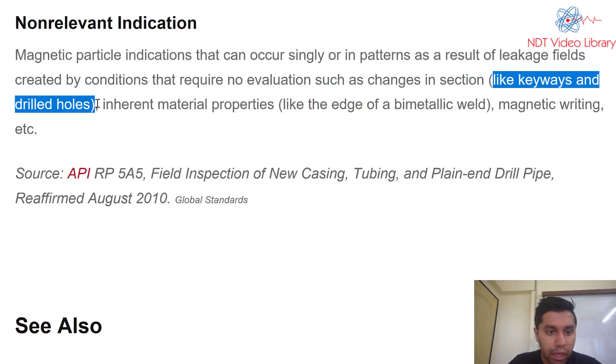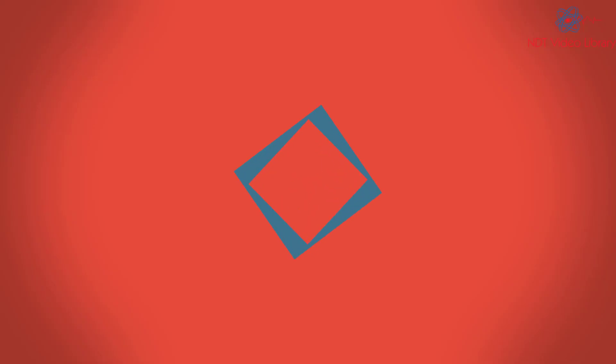In liquid penetrant testing, non-relevant indications include keyways and drilled holes — these will produce PT indications but they are non-relevant.